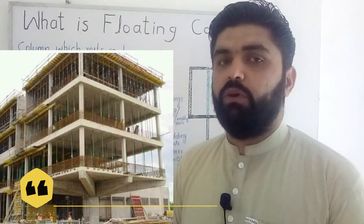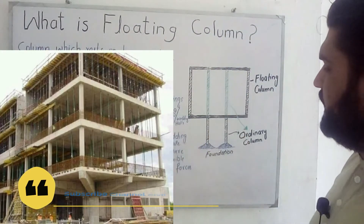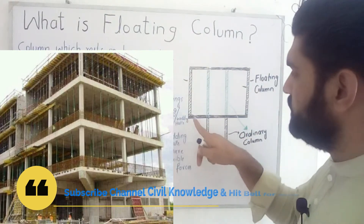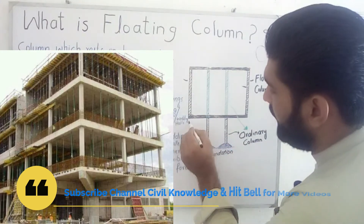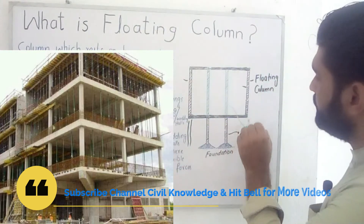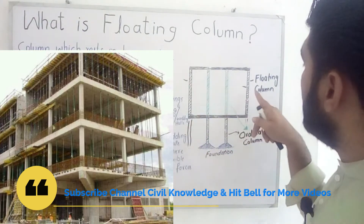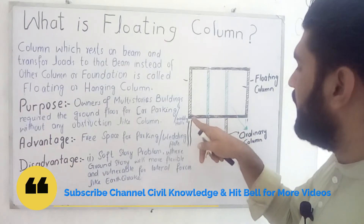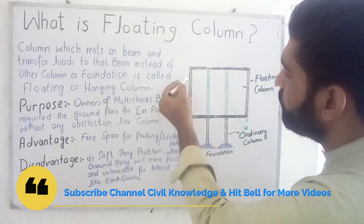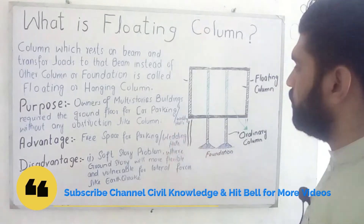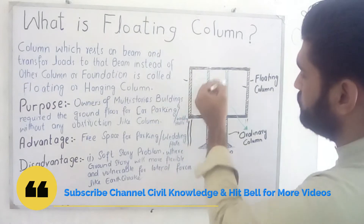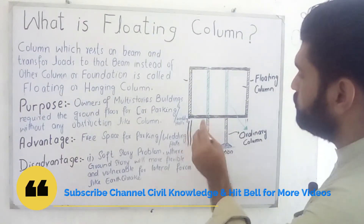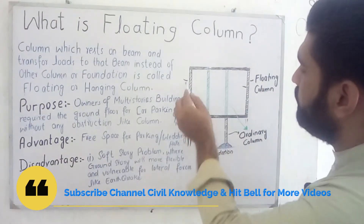The structure where we provide a floating column is called a floating column system. As you can see in the picture, these columns rest on a beam or slab instead of any column below them — there is no column or foundation beneath them. These are floating columns because they rest on a beam or slab. By contrast, an ordinary column rests on and transfers load to the column below it. This is the difference between a floating column and an ordinary column.